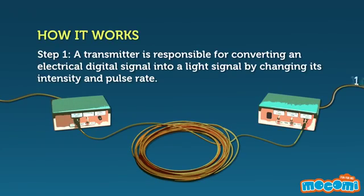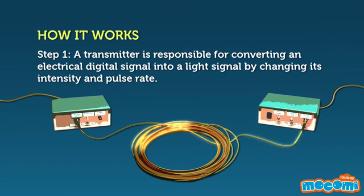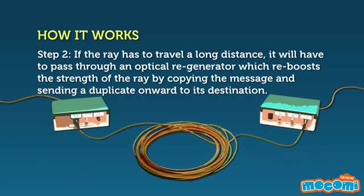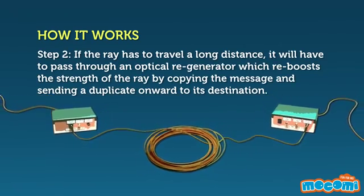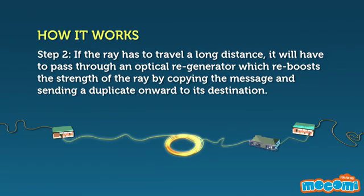A transmitter is responsible for converting an electric digital signal into a light signal by changing its intensity and pulse rate. If the ray has to travel a long distance, it will have to pass through an optical regenerator, which reboosts the strength of the ray by copying the message and sending a duplicate onward to its destination.